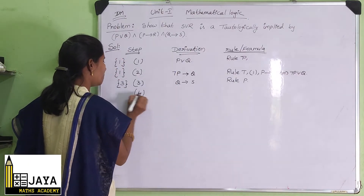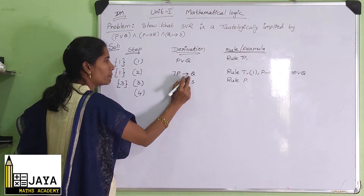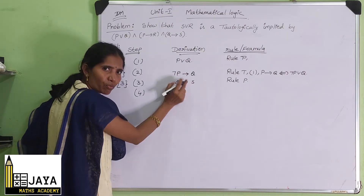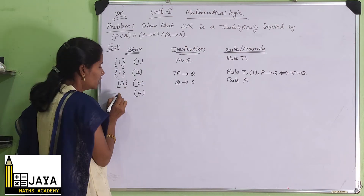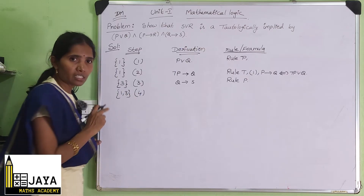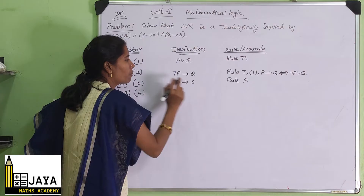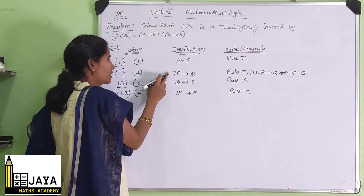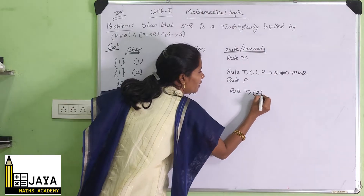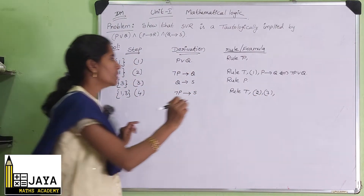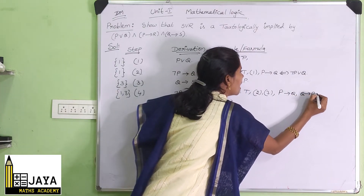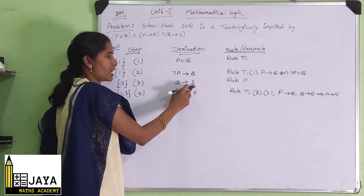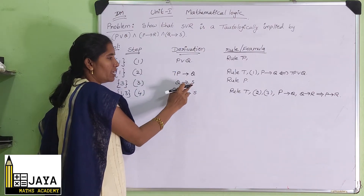In the fourth step, by using negation P implies Q and Q implies S together, we apply the formula: if P implies Q and Q implies R, then P implies R. The premises used are 1 and 3. So step 4 gives us: negation P implies S, Rule T, referencing steps 2 and 3.